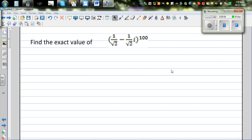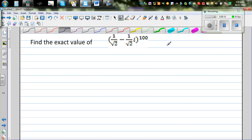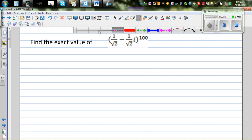Find the exact value of 1 over root 2 minus 1 over root 2i to the power 100. So the first thing that I want to do is, this is in a rectangular form. I want to change this into polar form and then use De Moivre's theorem to find the exact value.